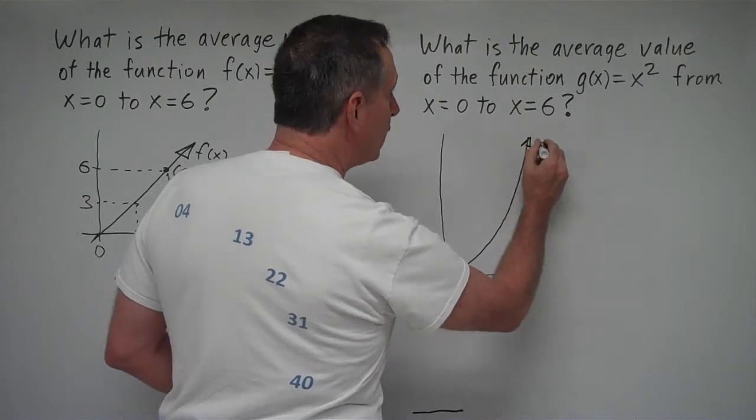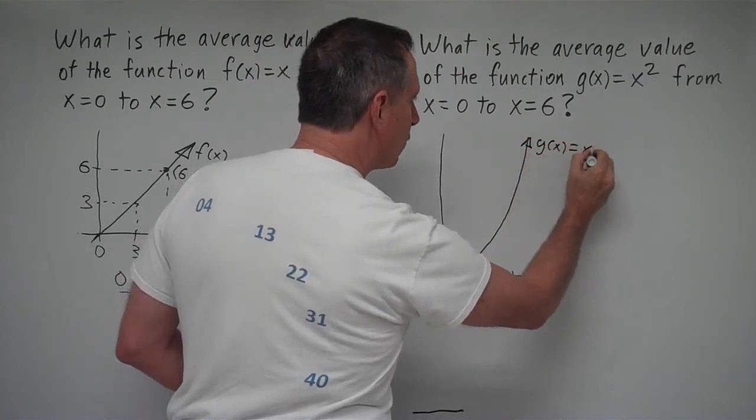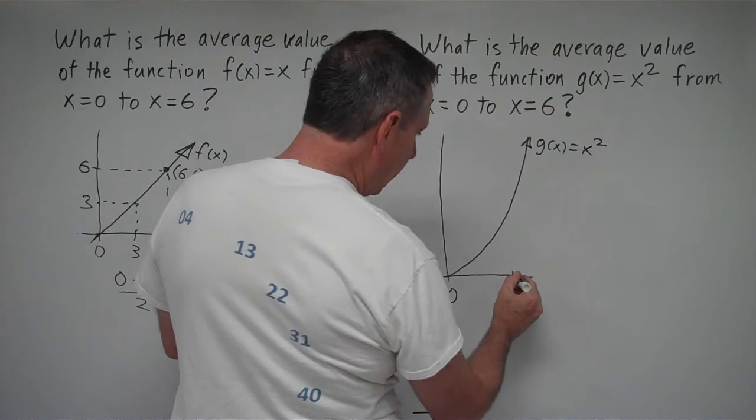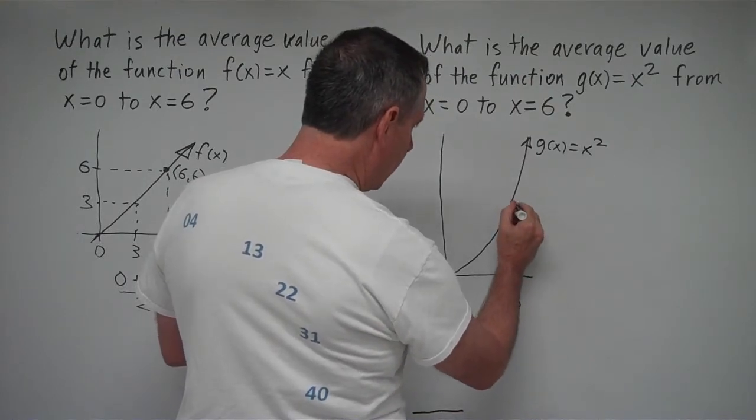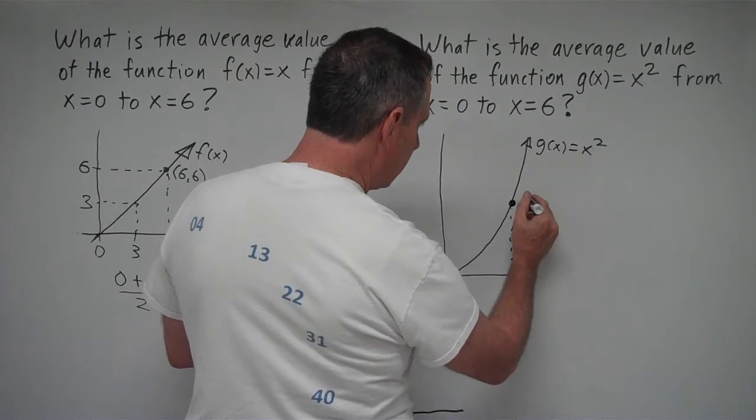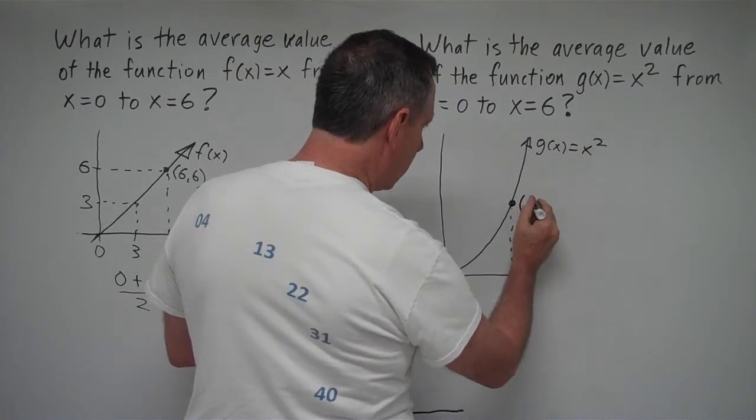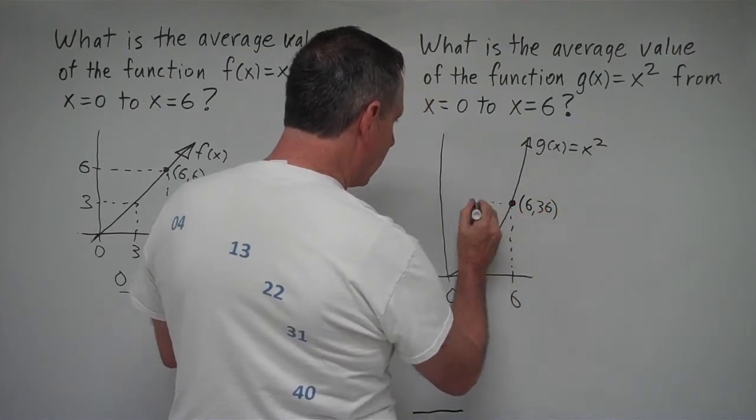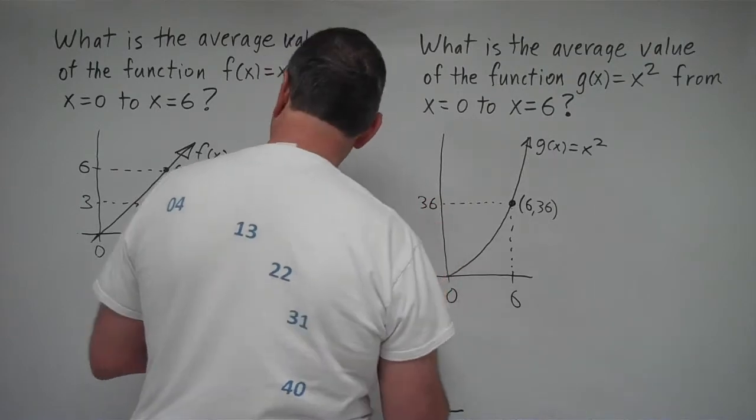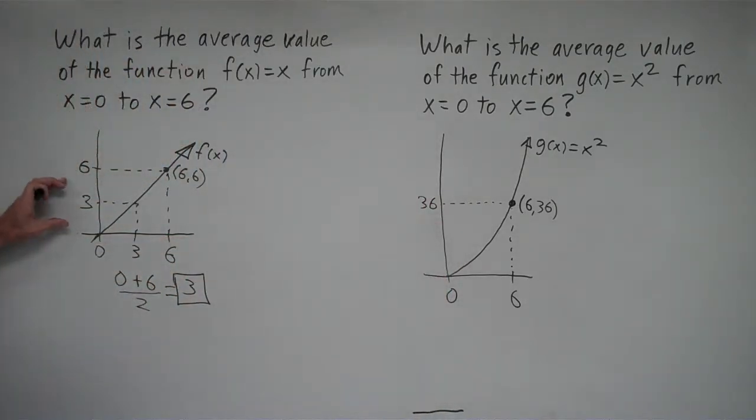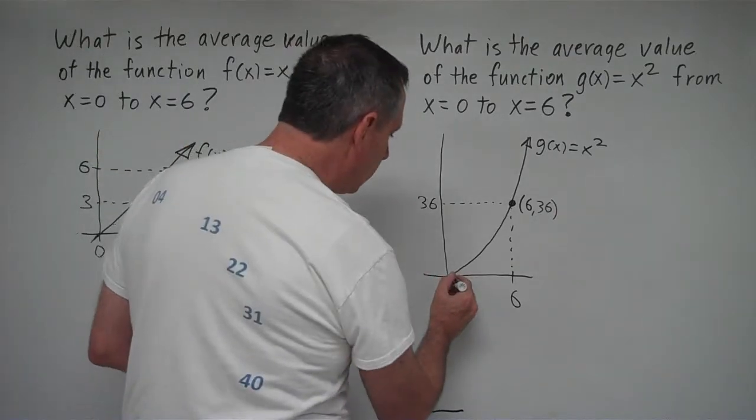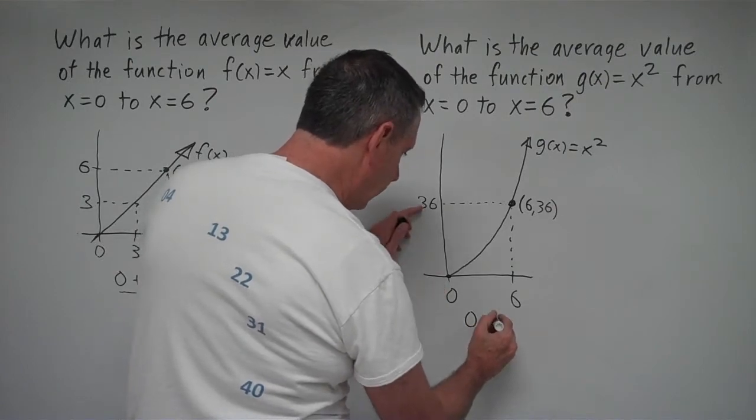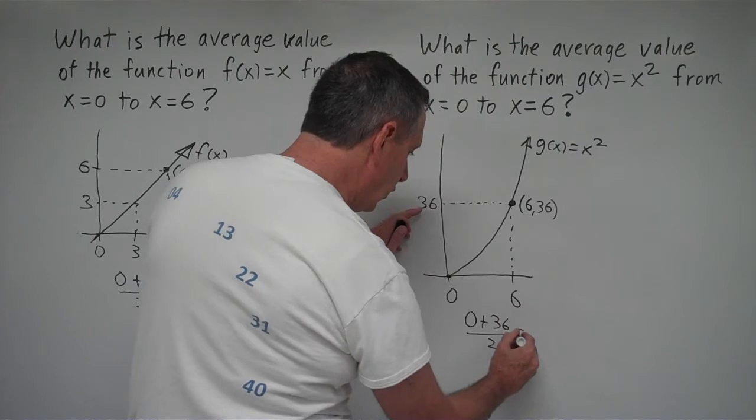So this is going to be g(x) equals x squared. And what we have is at x equals 6, we're going to have an output value of 6 squared. So our coordinate here is going to be 6 comma 36. Let me go over to the left here. We have 36. Now, if we were looking at this function like we did to the left here, the average value between these two points is going to be 0 for this output here, plus 36 for this output here, over 2, which will equal 18.